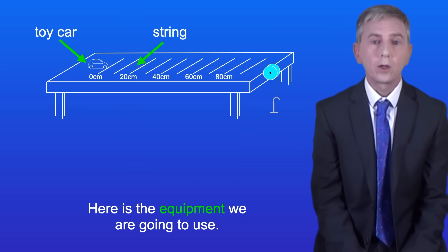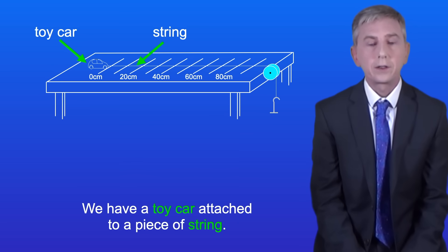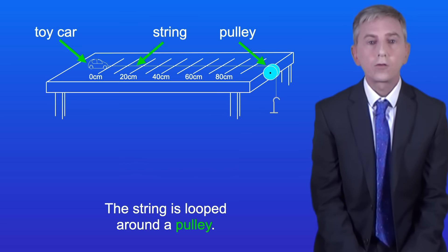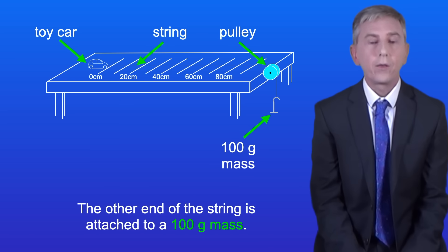Here's the equipment we're going to use. We've got a toy car attached to a piece of string. The string is looped around a pulley and the other end of the string is attached to a 100 gram mass.